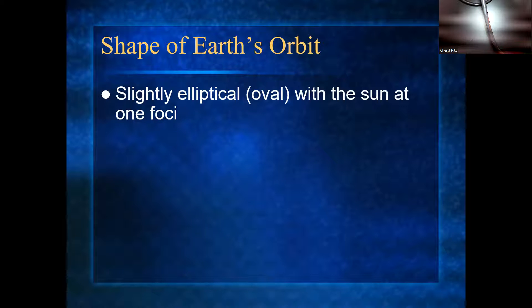So it says the shape of the earth's orbit is slightly elliptical. That's a fancy word for oval with the sun at one foci. Any part of that? What was huh about it? Foci.